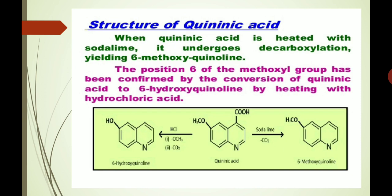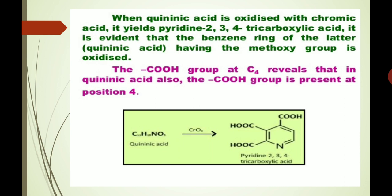We will establish the structure of quininic acid. When quininic acid is heated with soda lime, it undergoes decarboxylation, yielding 6-methoxyquinoline. The position 6 of the methoxyl group has been confirmed by the conversion of quininic acid to 6-hydroxyquinoline by heating with hydrochloric acid. When quininic acid is oxidized with chromic acid, it yields pyridine-2,3,4-tricarboxylic acid. It is evident that the benzene ring of quininic acid having the methoxy group is oxidized. The carboxylic group at C-4 reveals that in quininic acid, the carboxylic group is present at position 4.